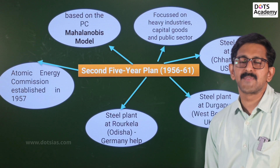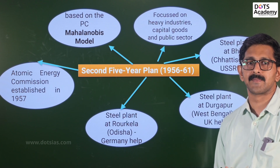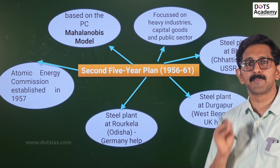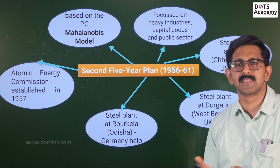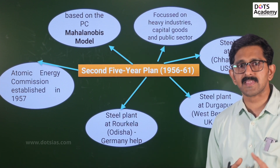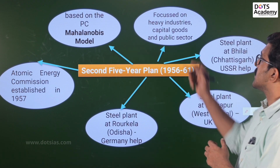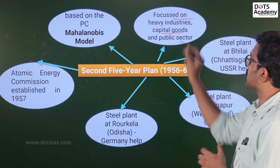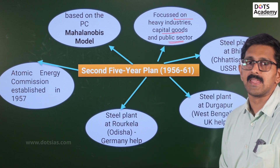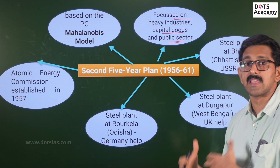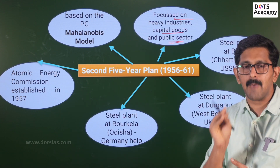Let's move on to the second five-year plan, covering 1956 to 1961. The first five-year plan focused on development of the primary sector. The second five-year plan focused on the manufacturing sector — specifically the secondary sector — with emphasis on the development of heavy industries and capital goods.